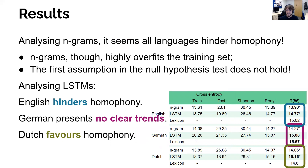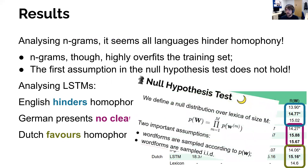Analyzing the LSTM language models, we see that English hinders homophony, German presents no clear trends, and Dutch favors homophony. This is the conclusion we get from our new hypothesis test. We should be careful here, though — we highlight this in the paper — that we don't know exactly how strongly the LSTMs hold to the first assumption in our hypothesis test. So take this with a grain of salt.